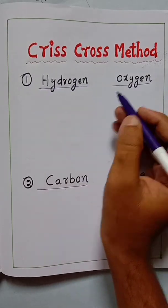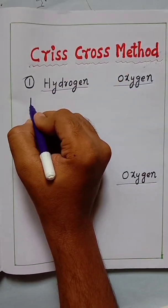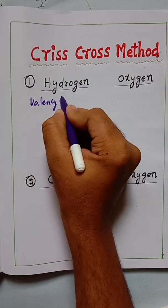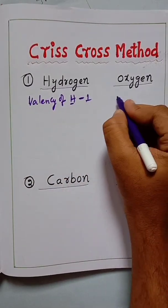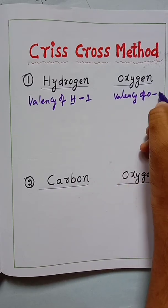Here we have taken two elements: hydrogen and oxygen. To find out the compound formula, we know that the valency of hydrogen is 1. Remember the valency of hydrogen is 1, and the valency of oxygen is 2.